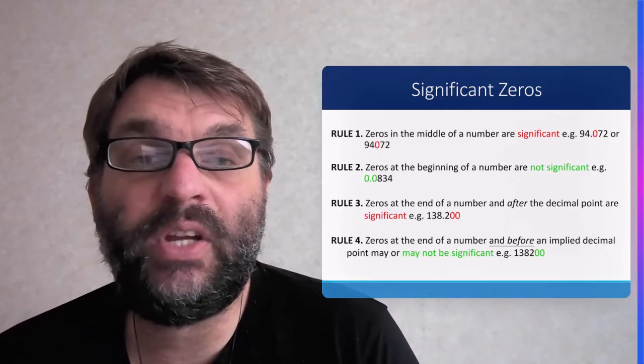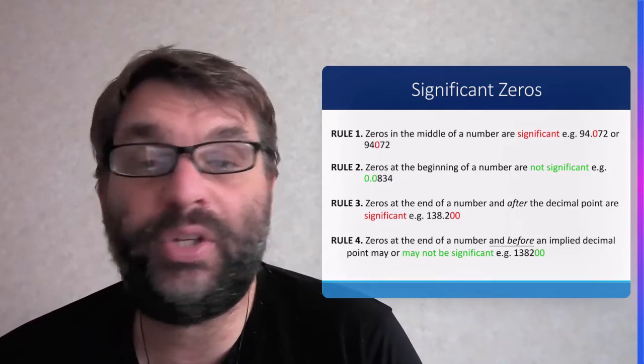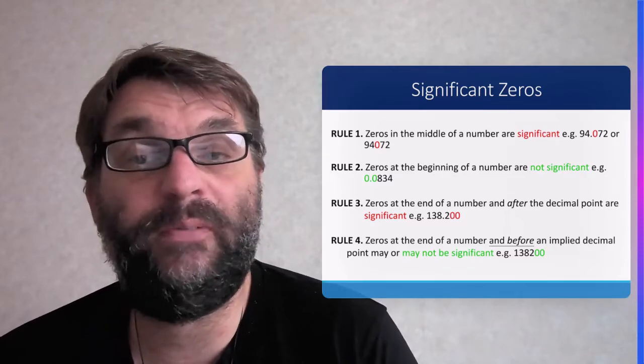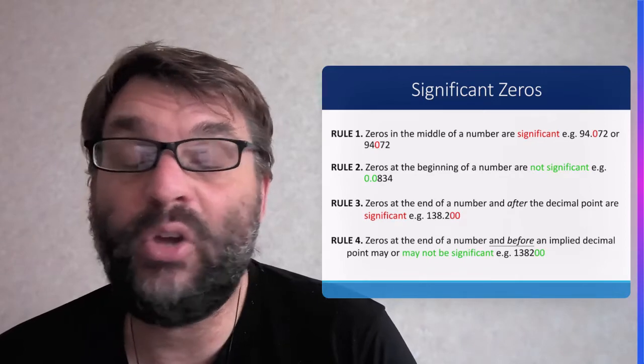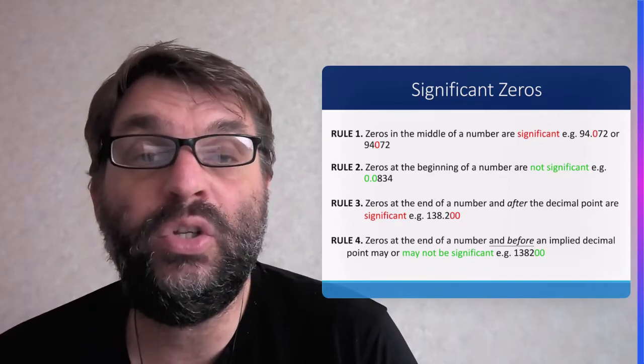The second rule is that zeros at the beginning of a number are not significant. So 0.5, first one's not, 0.0834 as we see here, those first two are not.